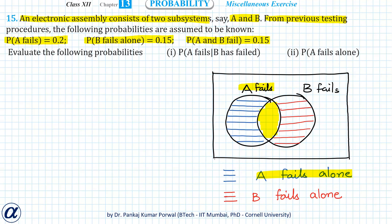So if I exclude that intersection part from event A fails, then I am left with the blue shaded part, and that corresponds to the event that A fails alone. Same for event B fails also.